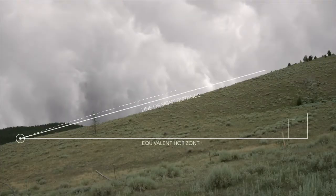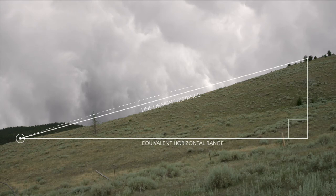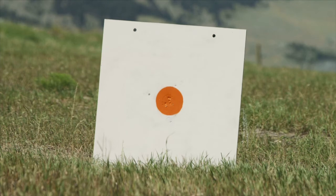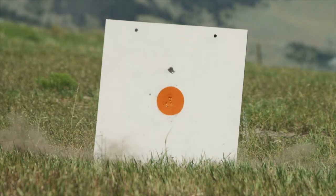Another variable hunters typically encounter in the mountains is the strong possibility of shooting at steep angles. When shooting on flat ground, gravity drags the projectile perpendicular to its flight direction. However, when shooting at inclines or declines, this is no longer the case. Ranging for line of sight distance instead of horizontal distance results in a point of impact that hits high.